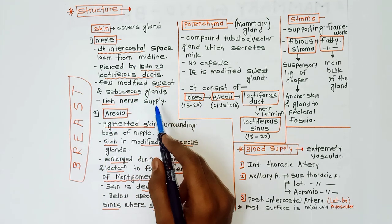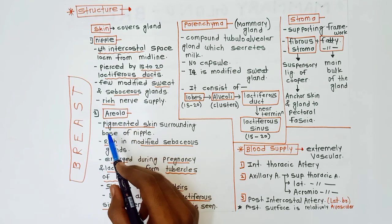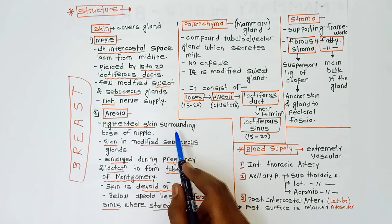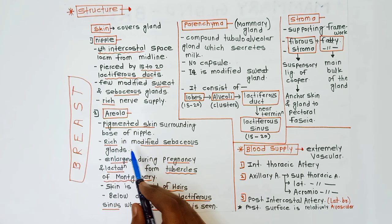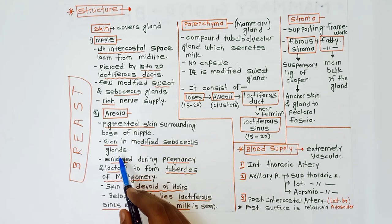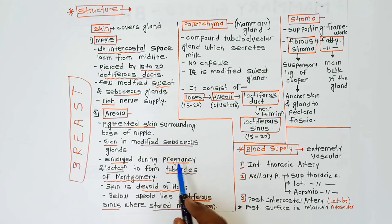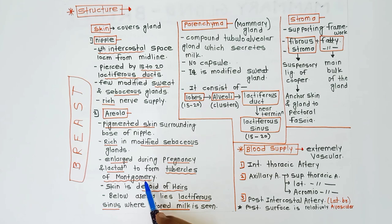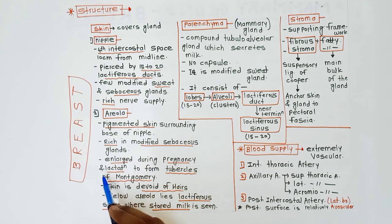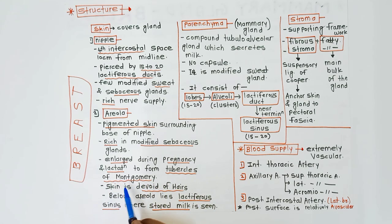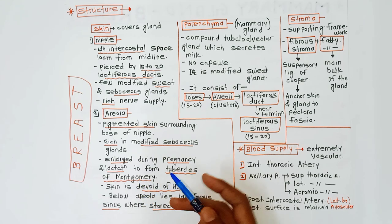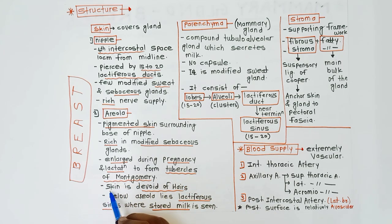The nipple is rich in nerve supply. Next is the areola — it is the pigmented skin surrounding the base of the nipple. It is rich in modified sebaceous glands. It is enlarged during pregnancy and lactation to form the tubercles of Montgomery — this can be an MCQ. The skin covering the areola and nipple is devoid of hairs.